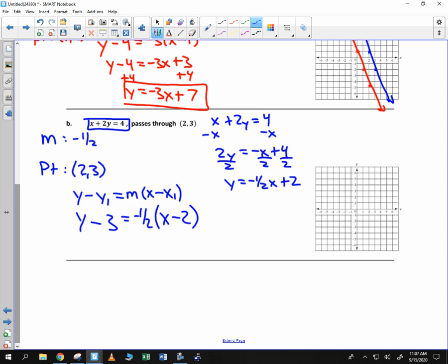So y minus 3 equals negative 1 half times x minus 2. As we distribute, y minus 3 equals negative 1 half x. When you distribute negative 1 half to negative 2, remember when you multiply two negatives, it becomes positive. And 1 half of 2 is 1. We add the 3. We get y is equal to negative 1 half x plus 4.